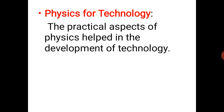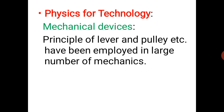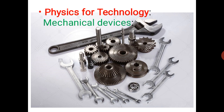Next is physics for technology. The practical aspect of physics helped in the development of technology. The first area is mechanical devices — generally we can say machineries. Principles of levers and pulleys have been employed in a large number of mechanical devices. In this picture we can see different pulleys, gears, and mechanical components.